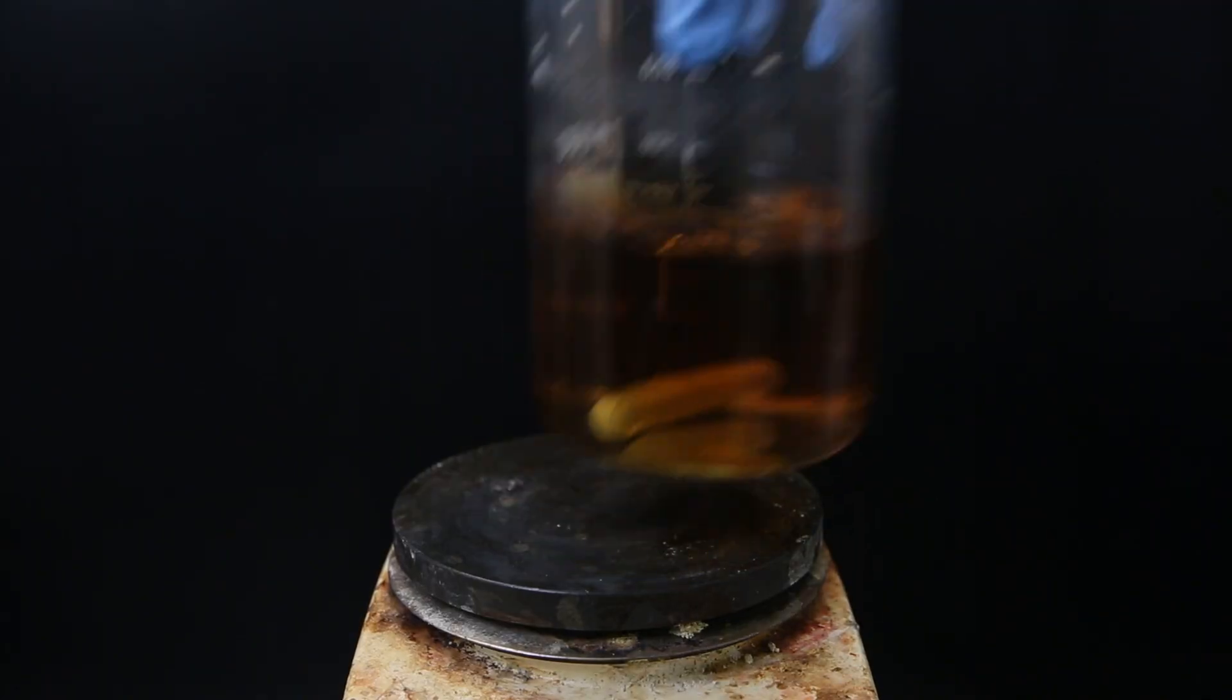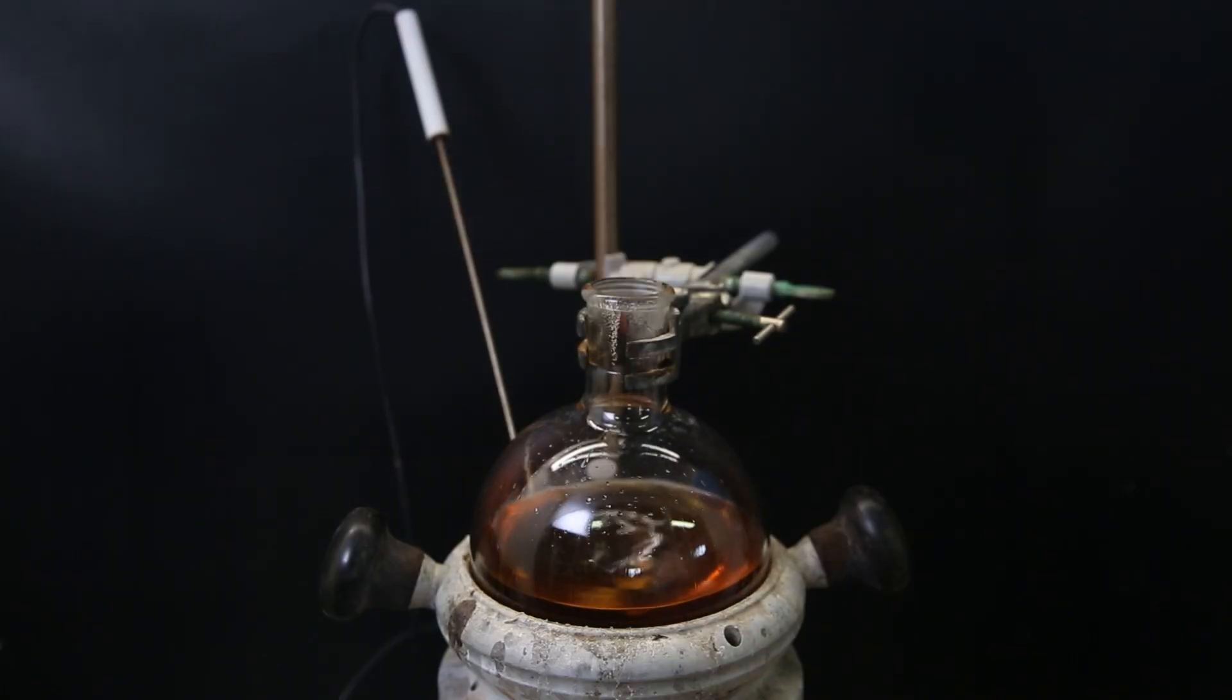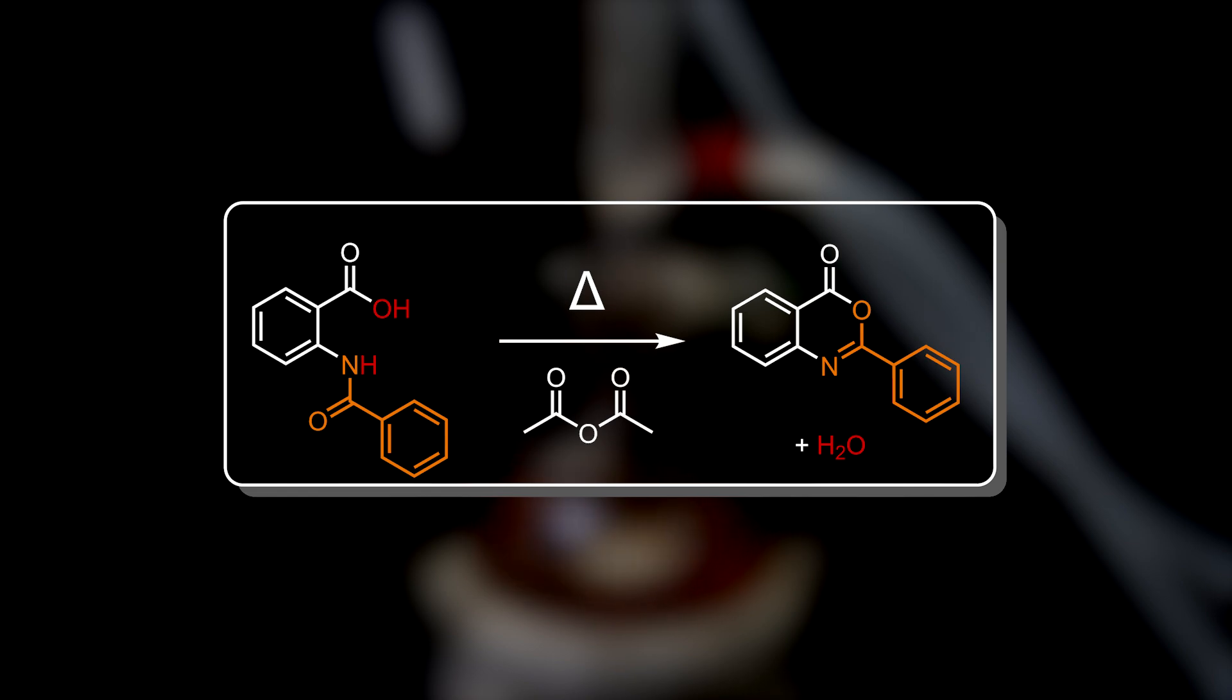When all of it has dissolved, I move it to this flask in a heating mantle, attach a condenser, and boil this solution for one day. This reaction is a thermal process, for which acetic anhydride is a convenient solvent, as it destroys water that is formed in the reaction.